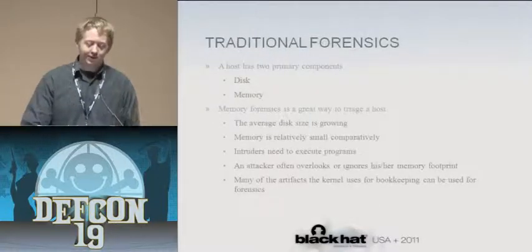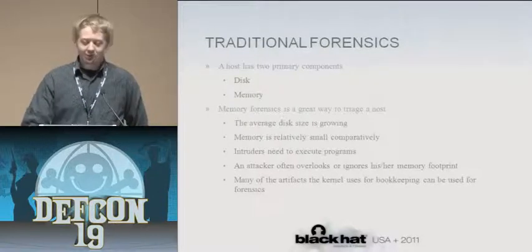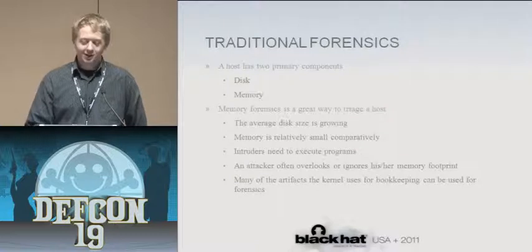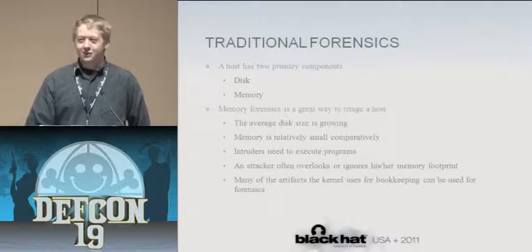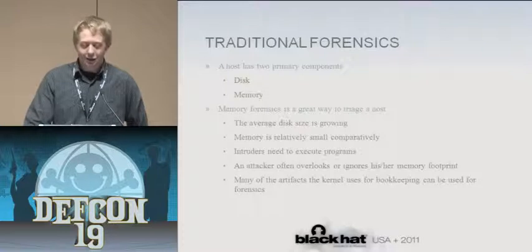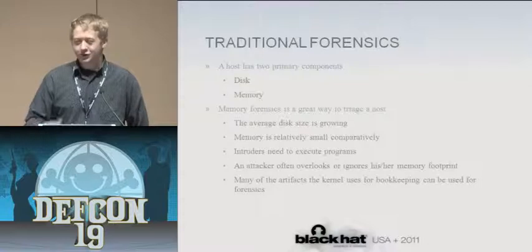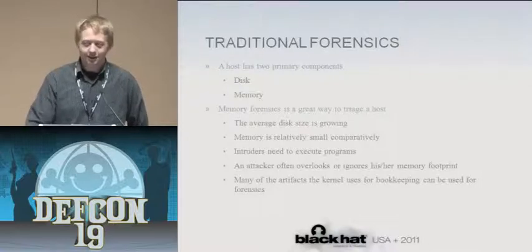Traditional forensics — a broad overview. A host has two large sources of information for forensics: the disk and memory. Lately memory has become a great way to triage a host in a forensics investigation. The average size of disk is growing extremely high — most hard drives come at least 250 gigabytes — so searching through a full disk image is getting to be a much longer process. Memory can really help speed up what you're looking for.